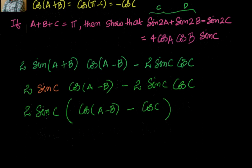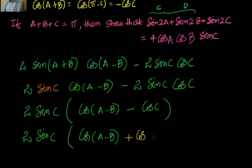Now let us look at the next step. This is nothing but equal to 2 sin c into cos of a minus b. Just now we have seen that cos of a plus b equal to minus cos c. So I can write it as plus cos of a plus b.